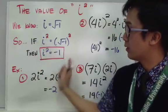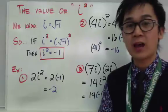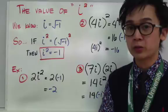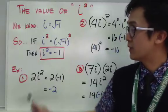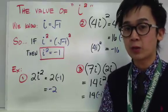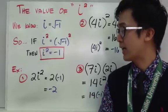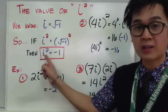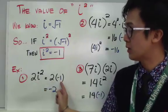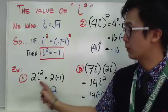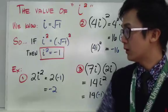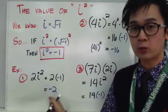Now that we know i squared equals negative 1, we can simplify and multiply imaginary and complex numbers. For example 1, we have 2i squared. We can simplify i squared by replacing it with negative 1. So 2i squared becomes 2 times negative 1, which is simply negative 2. Therefore 2i squared equals negative 2.